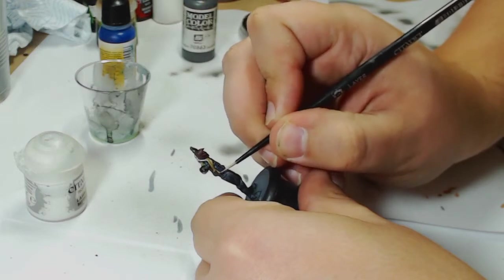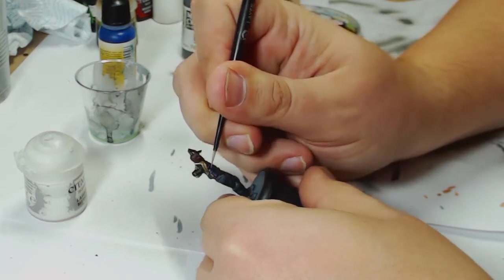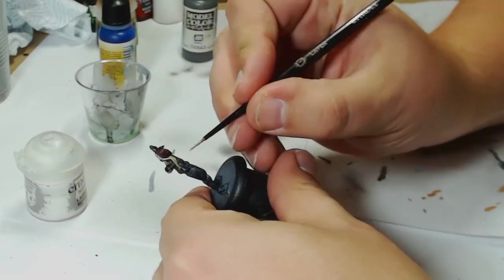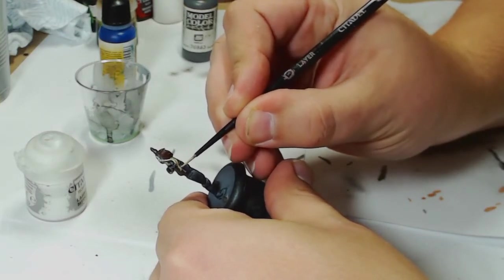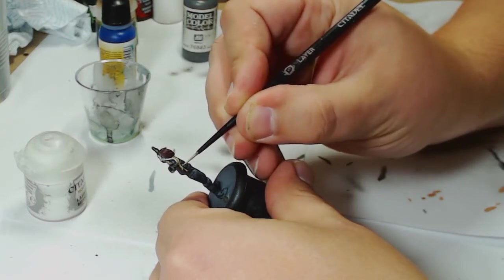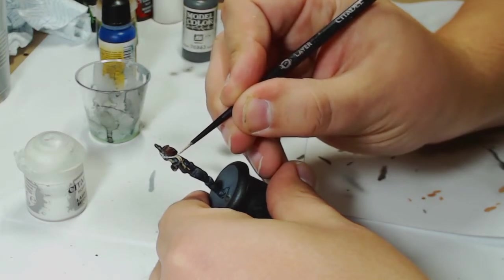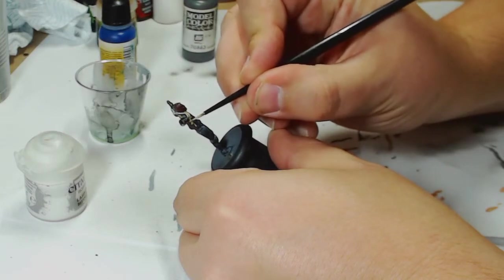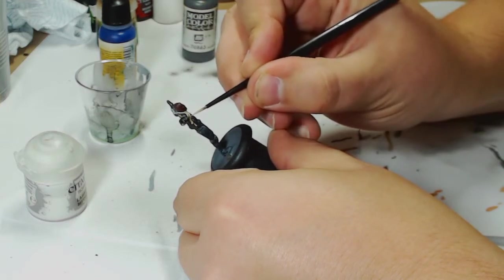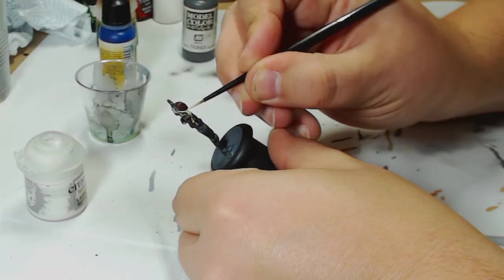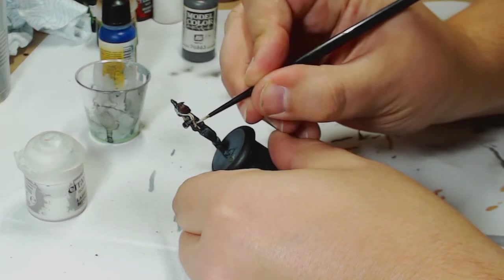I couldn't remember what it was called. The base coat was done in Karak Stone, which was then highlighted up with Ushabti Bone over an Agrax Earthshade wash. Now here I am working with, I believe it's Screaming Skull. As you can see, it's just working to the higher areas, making sure that it looks natural, looks like it's moving. Although the figure is fairly static, it does appear to be wind-swept to a degree. It's got very much a British army sort of 1920s scarf going on, very stylish.